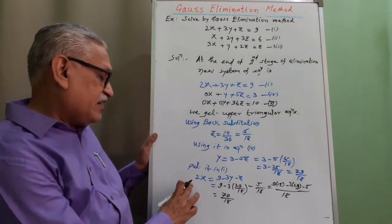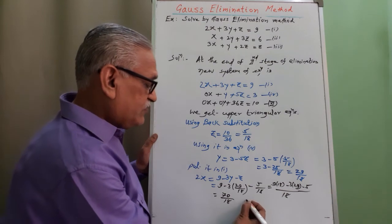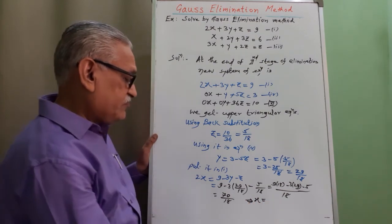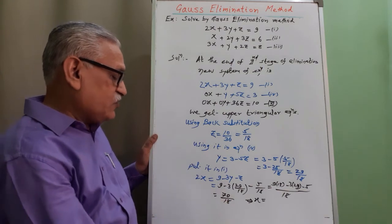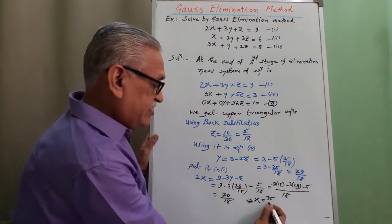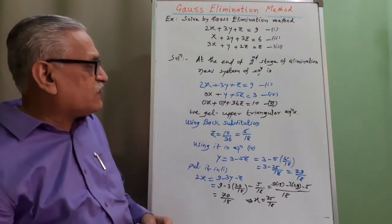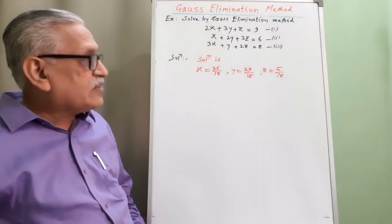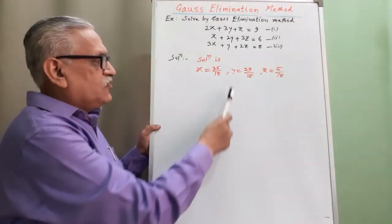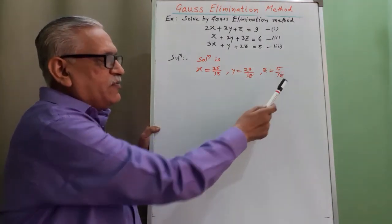Dividing throughout by 2, we get x equals 70 by 2, giving 35 by 18. Therefore the required solution is: x equals 35 by 18, y equals 29 by 18, and z equals 5 by 18.